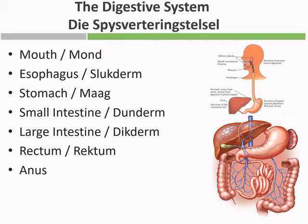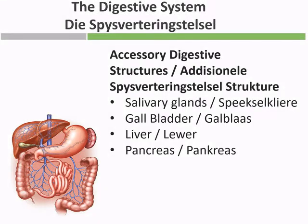You'll notice there is the mouth at the top, then the esophagus, then the stomach, and the small intestine, then the large intestine, then the rectum, and then the anus. The digestive system also has accessory digestive structures: the salivary glands, the gallbladder, the liver, and the pancreas. All of these secrete enzymes and other juices that are important for digestion.